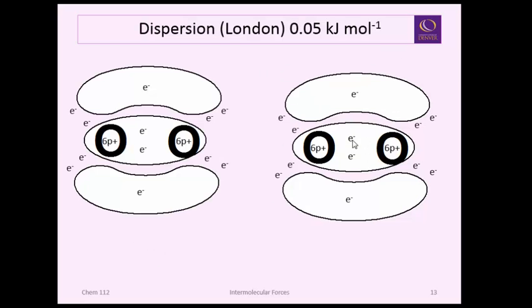The last force is what we call dispersion or London forces. How does it happen that you have two neutral molecules with no electrostatic force field around them and then all of a sudden they bond together?